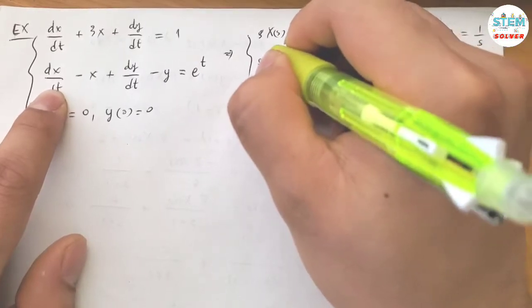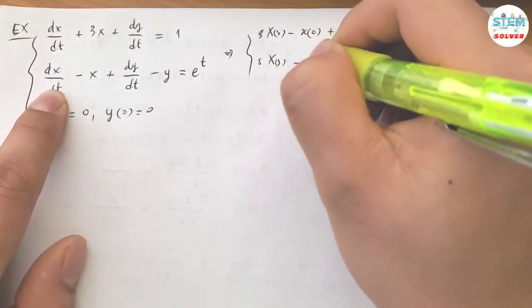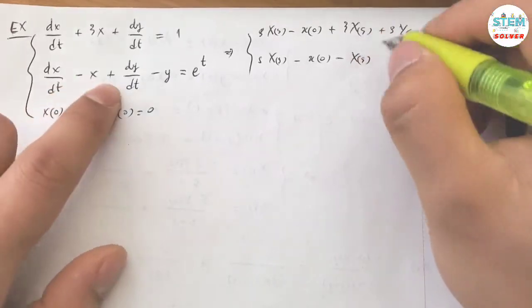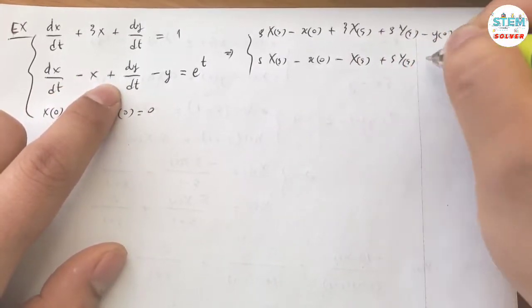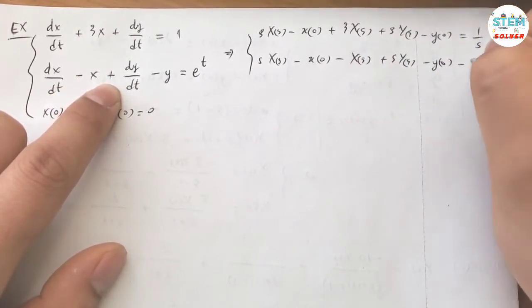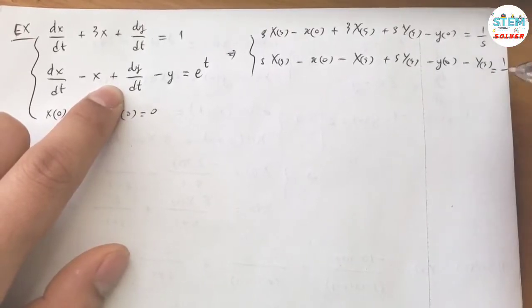This one: S X(S) minus X(0) minus capital X(S) plus S capital Y(S) minus Y(0) minus capital Y(S) equals 1 over S minus 1.